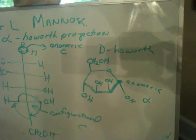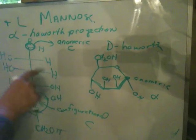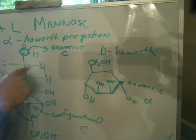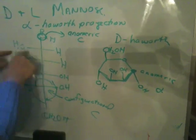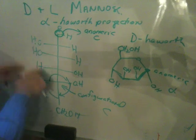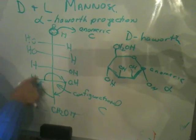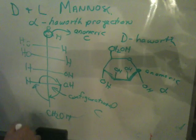So that's the alpha anomer and that's literally all I did there. I converted this into an OH and I put it down because I wanted to make the alpha, and then I just worked my way through and I said left up, left up, right down, right down. And then I rotated this one and this is always going to be up in a D sugar.